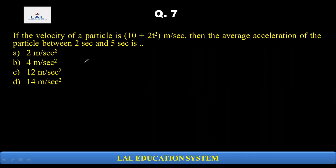What do we need to do here? We need to calculate the average acceleration for the particle. What is the velocity that we have given here? It is 10 plus 2t square. So, we need to calculate the velocity.